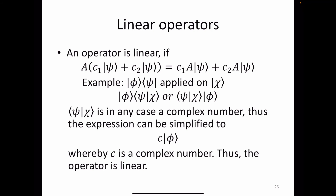An operator is linear if applying operator A to a combined state alpha*psi1 plus beta*psi2 gives the same result as applying A to each state separately and combining. This is similar to what we saw before with the identity operator.